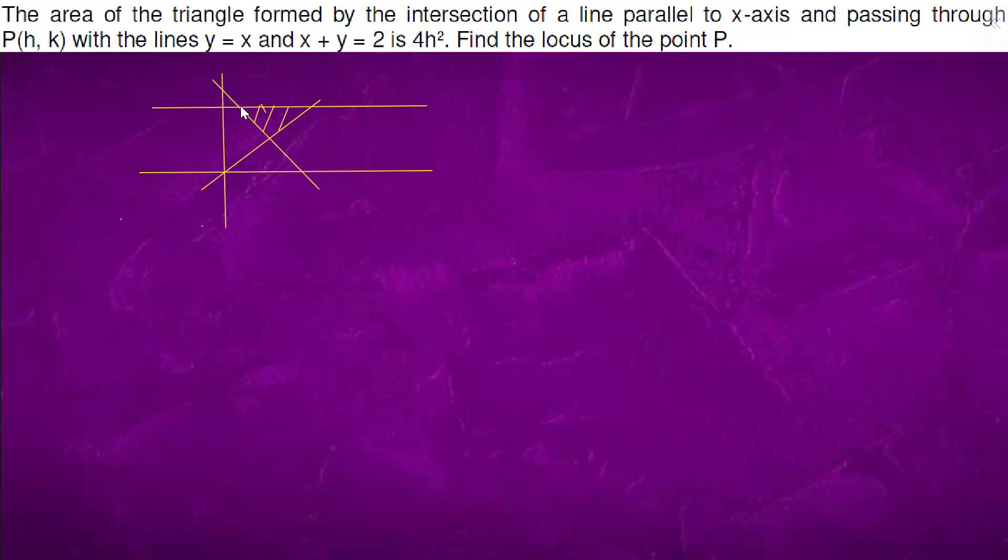So this line is passing through h, k. Can we say that the equation of this line is y equals to k? So this point is going to have k as the y-coordinate, and we don't know the x-coordinate.